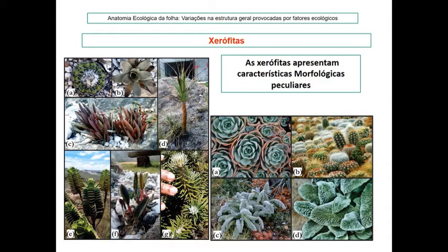Outra característica interessante é a filotaxia das folhas. Entrenós bem curtos e folhas com filotaxia oposta cruzada, onde uma folha vai sombreando a outra e criando um microclima entre elas, reduzindo a perda de água quando essas plantas abrem os estômatos para captar CO2.